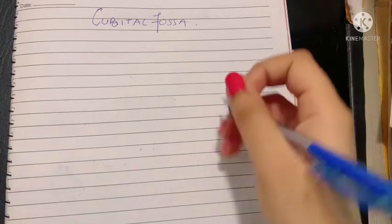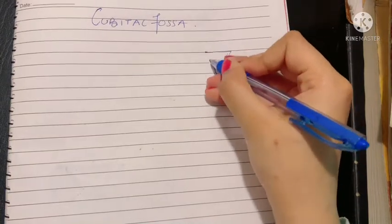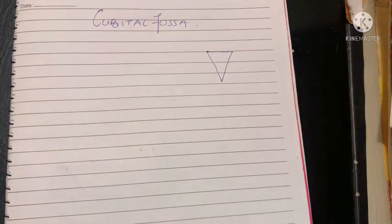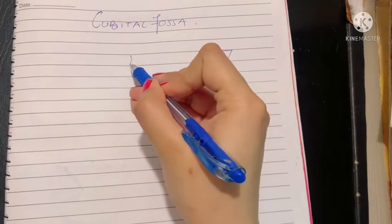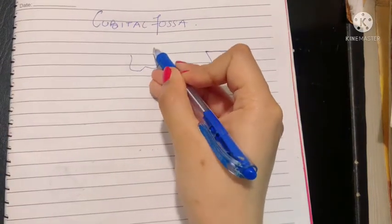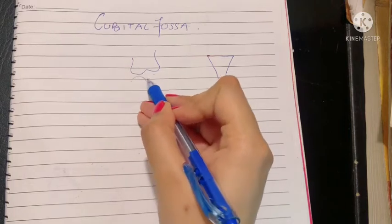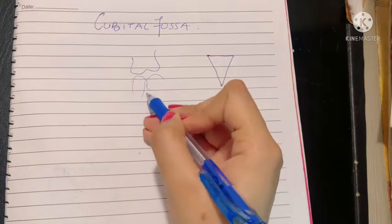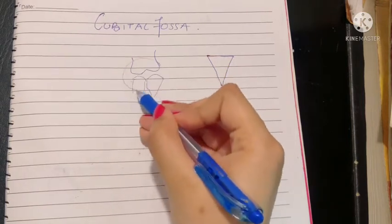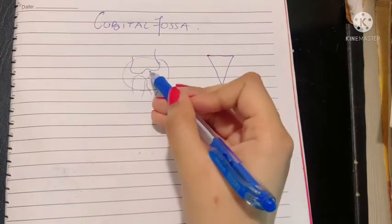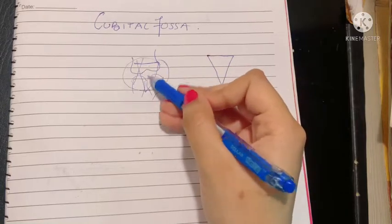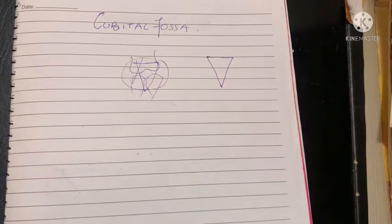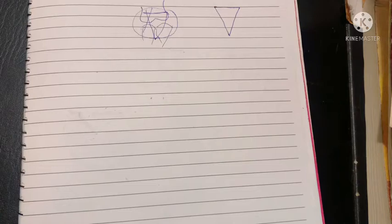The cubital fossa is basically a triangular hollow situated in the front of your elbow. The elbow joint is where the humerus ends and the radius and ulna begin. Just in front of this joint is a triangular space called the cubital fossa.